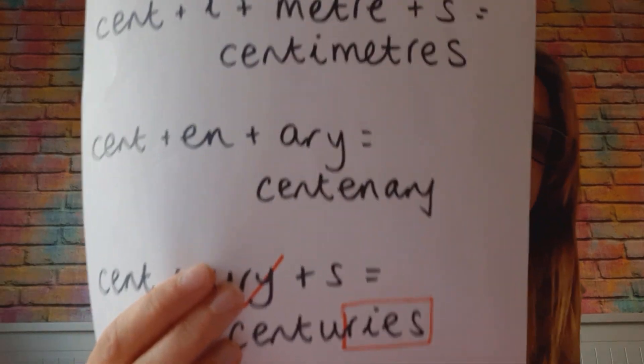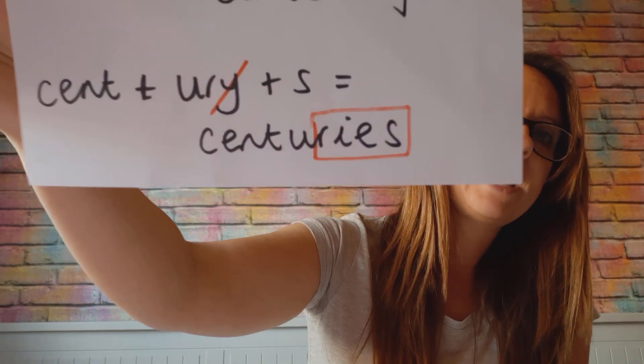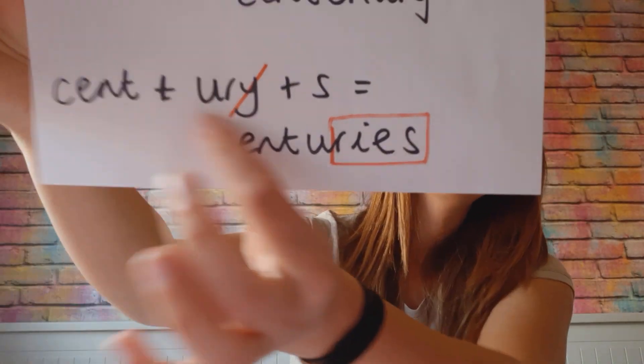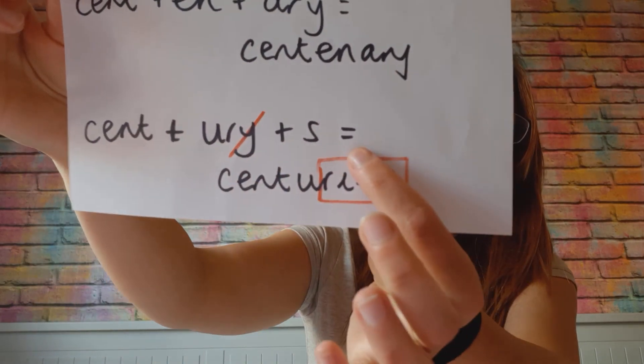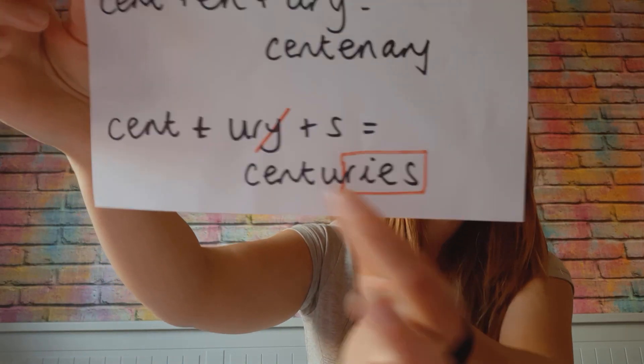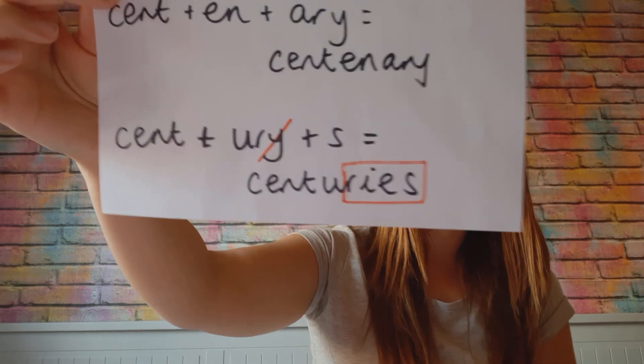We've got centenary — that's like an anniversary of a hundred years, so it's the centenary of a major event that's happened. And back to century — if you have centuries, that's the plural rule: drop the y and change it to i-e-s for the plural.